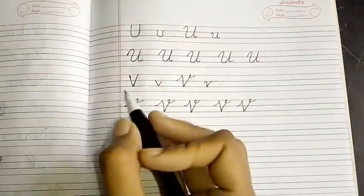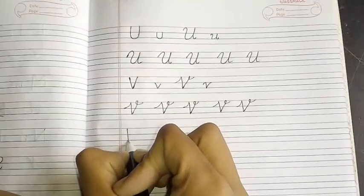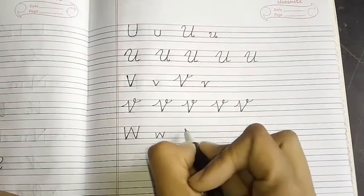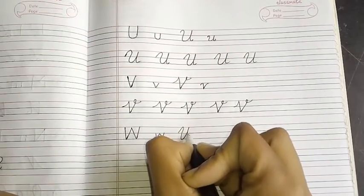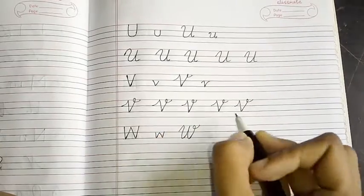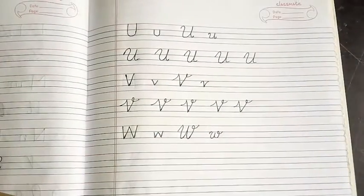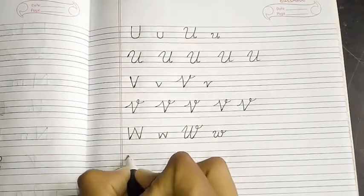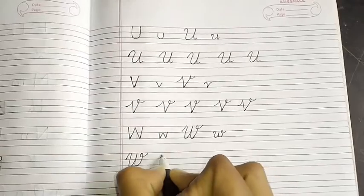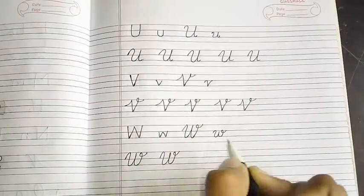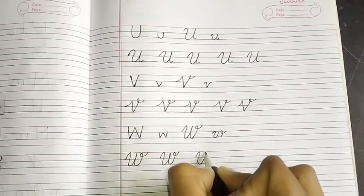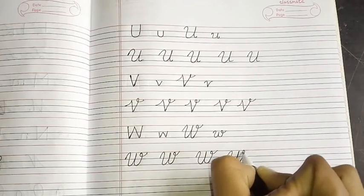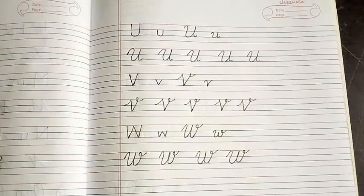Now, U, V, W. This goes print capital, print small, cursive capital, and cursive small. We will practice cursive capital. Second line beginning. Simple. W.